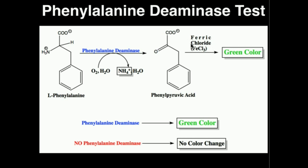Therefore, as long as we add ferric chloride, a color change to green is indicative of phenylpyruvic acid being present, which in turn indicates that we have phenylalanine deaminase. Assuming we use the appropriate strategy for identifying the bacteria, a green color change — a positive phenylalanine deaminase result — indicates that we have one of the members of the family Enterobacteriaceae, which are Proteus or Providentia.